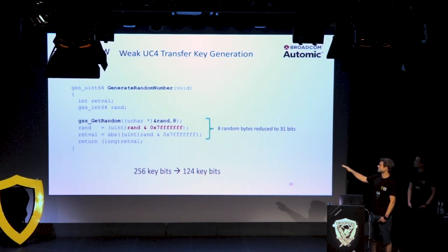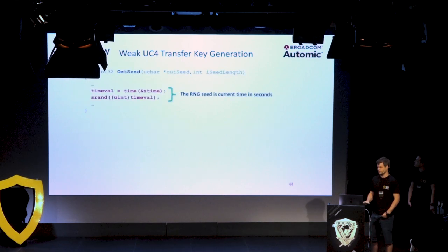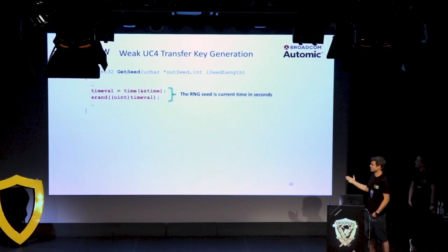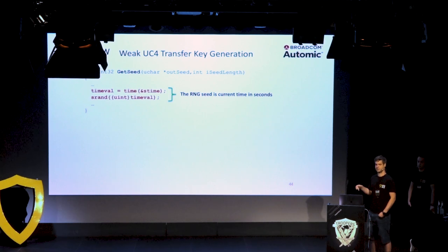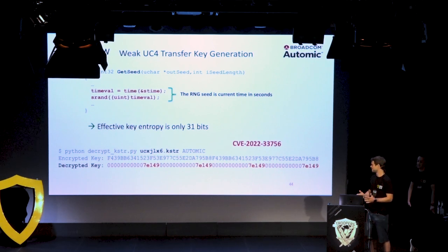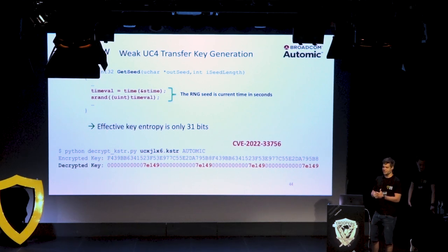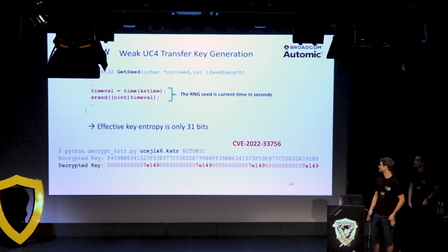It gets worse. Looking into the gss_get_random function, every time it's invoked it reseeds the random number generator with the current time in seconds. Since the function is called four times in a row — probably within the same second — everything boils down to the same number, leaving only 31 bits of entropy, which is definitely too few. The decrypted AES key from the key store looks like a highly repetitive pattern, easily brute-forceable. Since the agent connects to the central component and the engine speaks first with an encrypted packet, brute-forcing is possible offline.